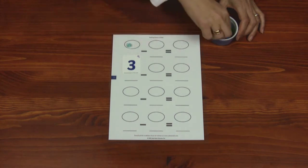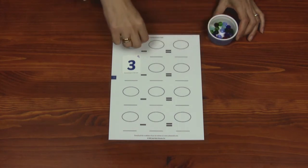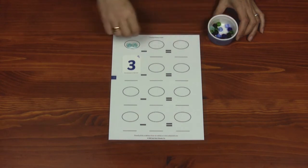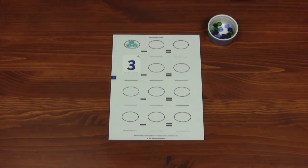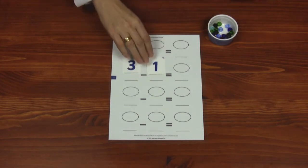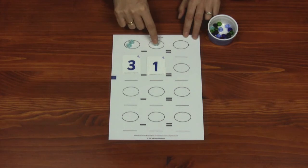One, two, three. One. Three minus one. Move one bead from the first space into the second space.